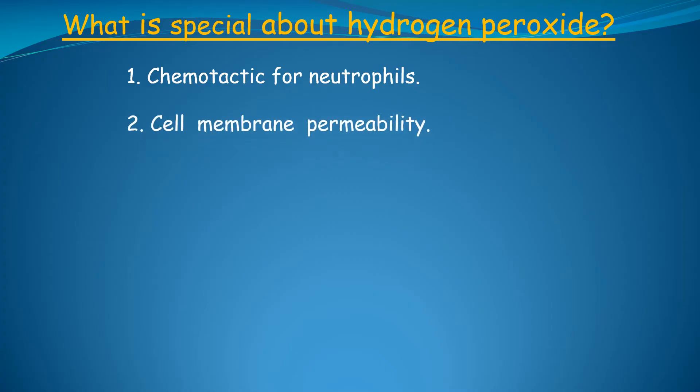Number two, cell membrane permeability. Hydrogen peroxide is highly cell membrane permeable, which means that hydrogen peroxide produced inside the colonic epithelial cells can leak out through the cell membrane, causing ulcerative colitis. Number three, hydrogen peroxide requires glutathione for elimination.